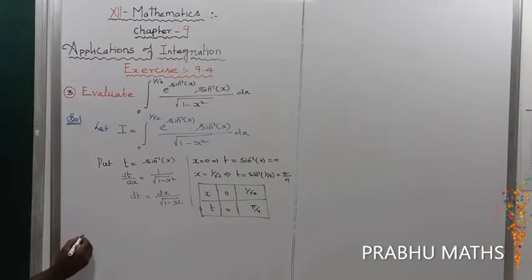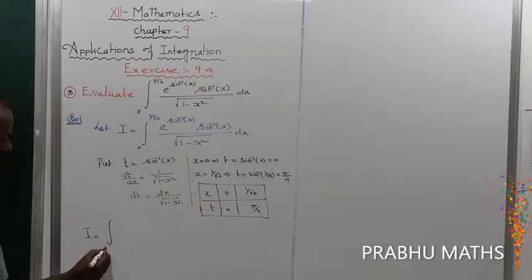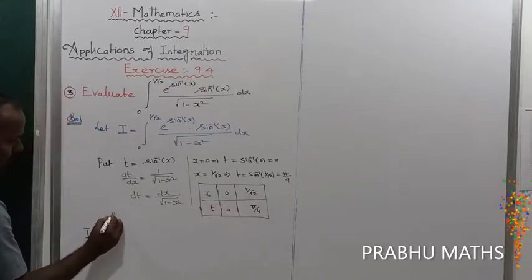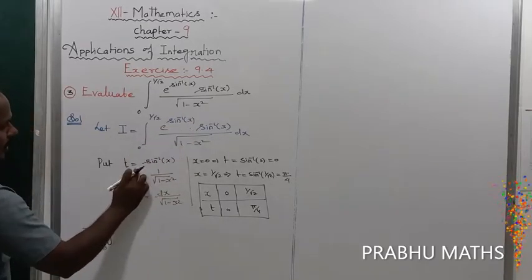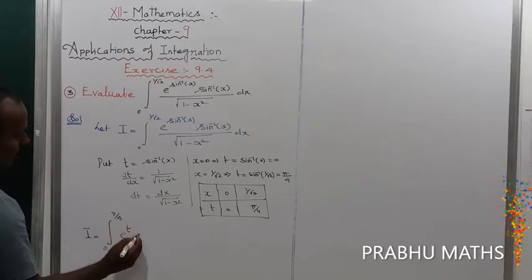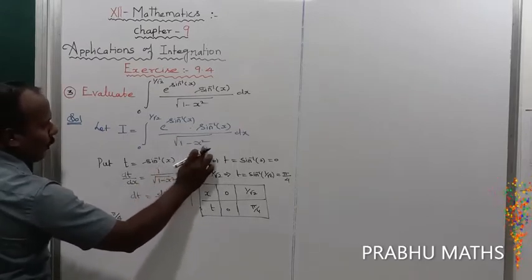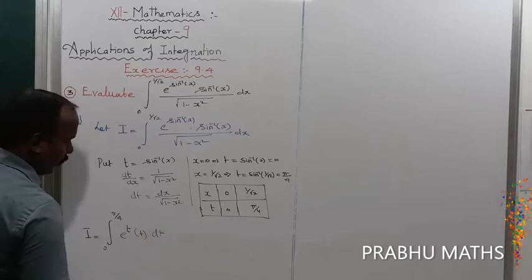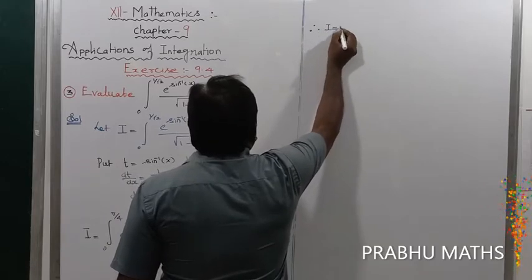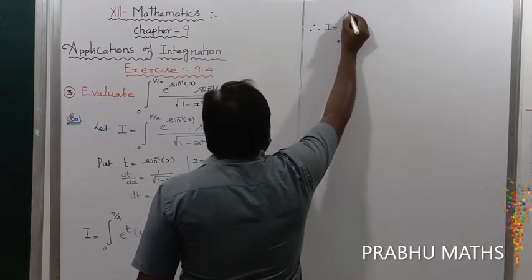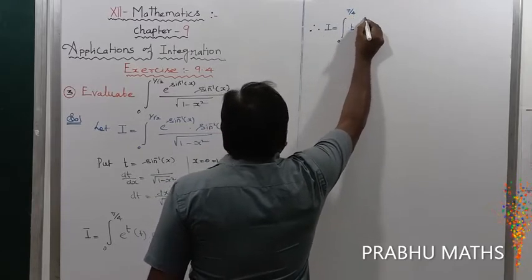Substituting the values: the lower limit 0 stays 0, the upper limit 1 by root 2 becomes pi by 4. Also, e to the power of sin inverse x becomes e to the power t, sin inverse x becomes t, and dx by root of 1 minus x squared becomes dt. Therefore I equals the integral from 0 to pi by 4 of t times e to the power t, dt.